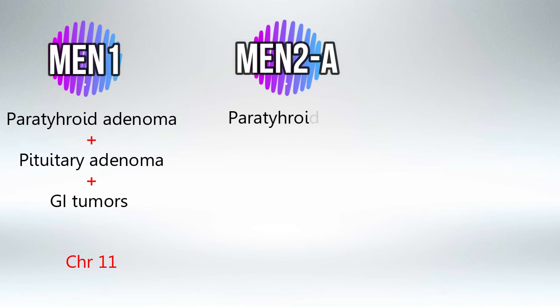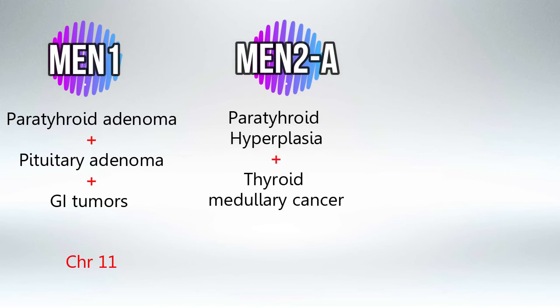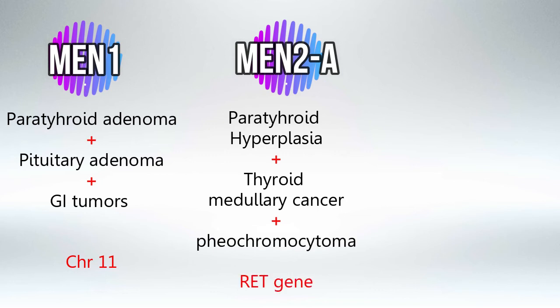MEN2 has two parts: A and B. MEN2A is associated with parathyroid hyperplasia — not adenoma — plus medullary thyroid cancer, which is C-cell cancer, and pheochromocytoma. It is associated with the RET gene.